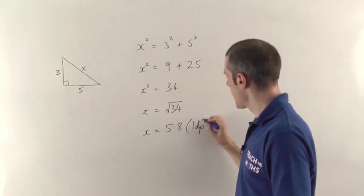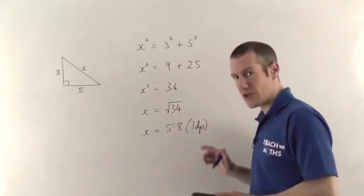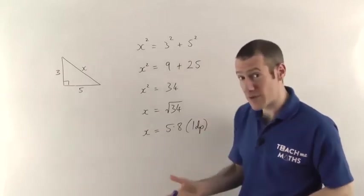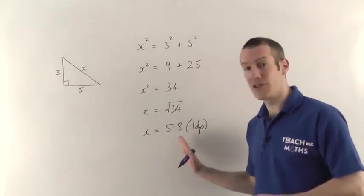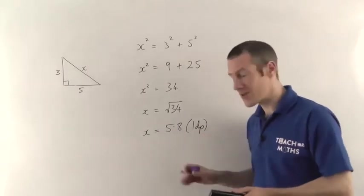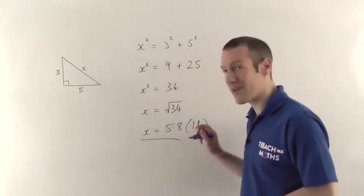Do be careful, with Pythagoras questions, the answer is usually a long decimal number and you will have to round it. They'll probably tell you in the question how many decimal places or maybe significant figures to use when rounding, but you must round it correctly or you're going to lose a mark there. Go and watch the rounding to decimal places and significant figures videos if you want to know more about that, but do make sure you round correctly.